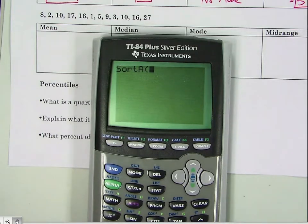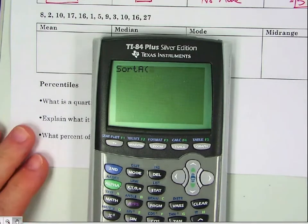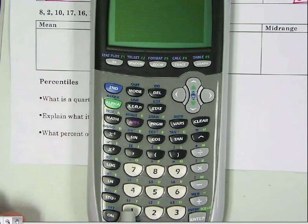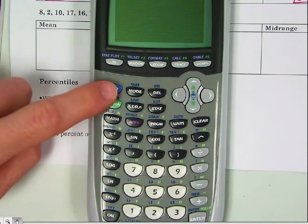And now it's asking you for some sort of input. So we want to sort a list. Now the list we want is L1. So if you look on your calculator, you can see an L1 right above the number 1. So you're going to hit second, 1,